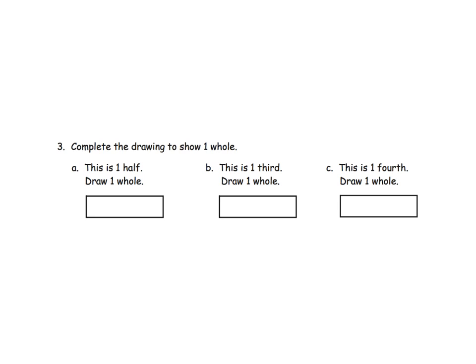Moving on, it says, complete the drawing to show one whole. So we did this earlier in this video. It says this represents one-half. So if we want to draw what one whole would look like, if this is one-half, let me put it right here, one-half. So if this is one-half, and we want to draw one whole, that means we need to draw another copy of what we have. So one-half plus another half equals one whole.